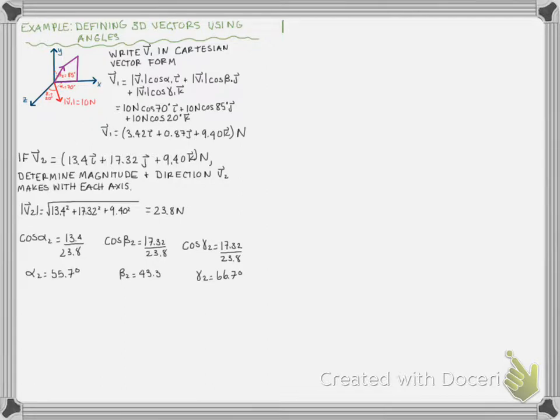So I've gone both ways. Starting with V1, I started with the magnitude and its direction and was able to find the i, j, and k components — that is, write the vector in Cartesian vector form. And then going the reverse direction, starting with the Cartesian vector form, you can find the magnitude and those three directional angles from each of the axes.